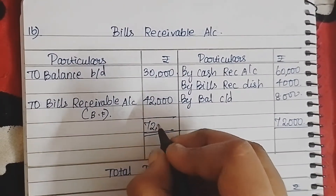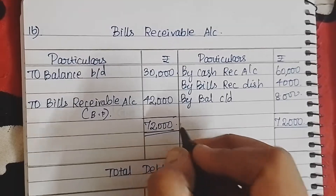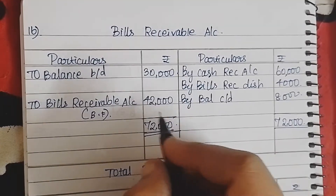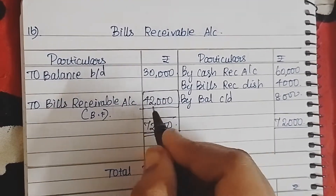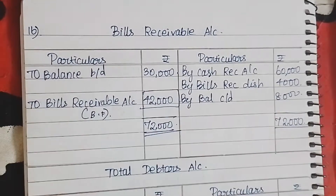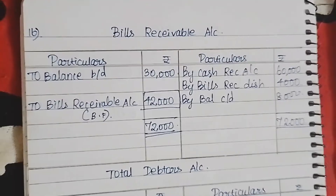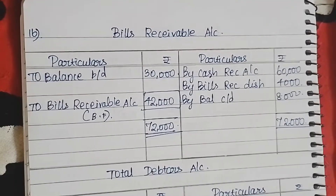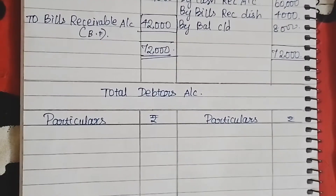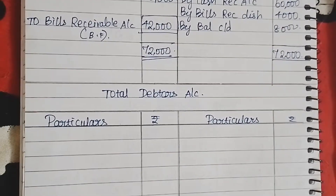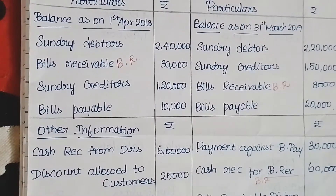Now, bills receivable is 42,000. Next, we have to find the credit sales using total debtors account.